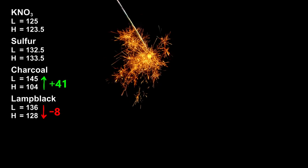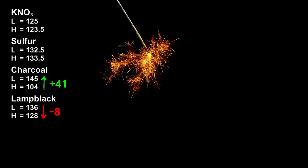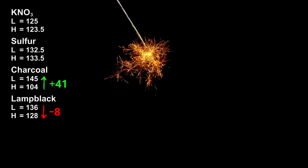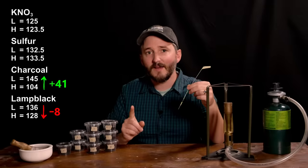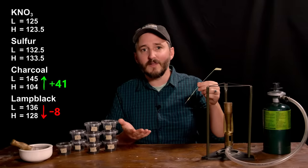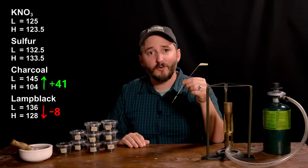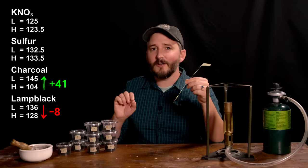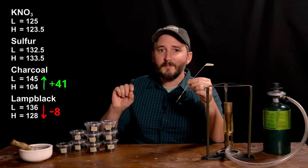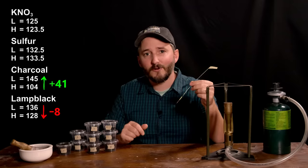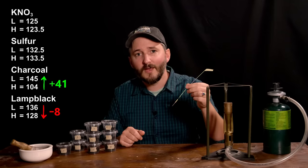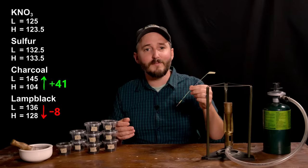I never discovered this with a one variable at a time approach, because while I did adjust the ingredients only one at a time, I would always add lamp black first, test the burn, and then lower the charcoal to compensate. If I had thought to lower the charcoal first, I might have noticed that that was the real cause of my improved results, where adding the lamp black was actually making them worse.